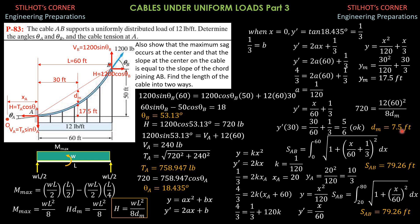Another way to verify D_M: once the equation of the cable is known, at the center X is 30 feet, so 30 squared over 120 plus 30 over 3 gives Y_M equals 17.5. Since this is the center and the vertical distance between A and B is 50 feet, half of 50 is 25. So 25 minus 17.5 equals D_M, which is 7.5 feet. Also correct.